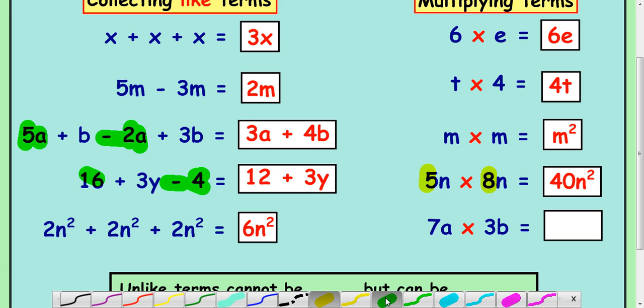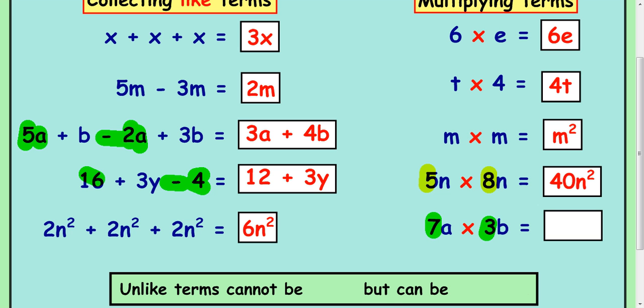Do the numbers first. So we've got a 7 here and a 3, which 7 times 3 makes 21. And a times b is just ab. If you're multiplying two letters in algebra and they're different, you just sit them next to each other. And that means times.